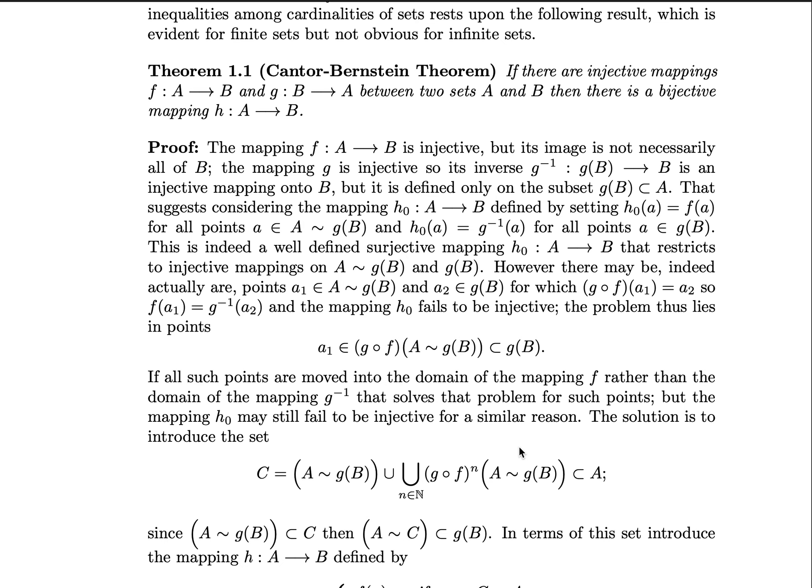If all those points are moved into the domain of the mapping f, rather than the domain of the mapping g inverse, that solves that problem for such points. But the mapping h₀ may still fail to be injective for a similar reason.